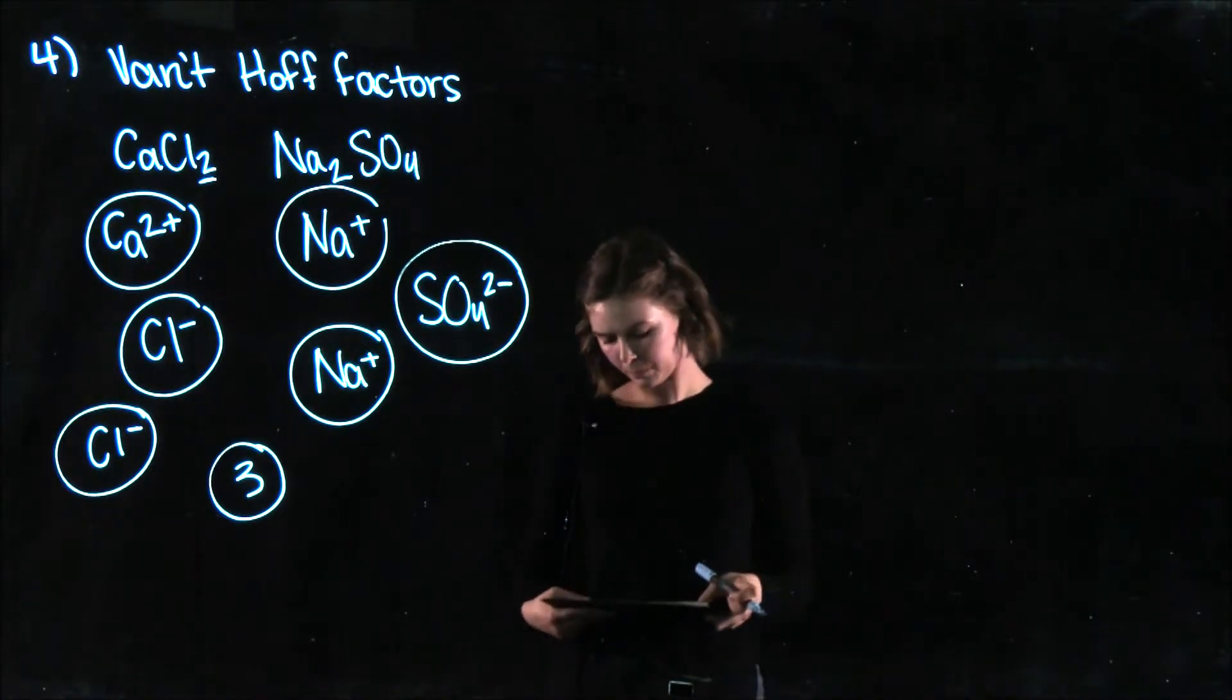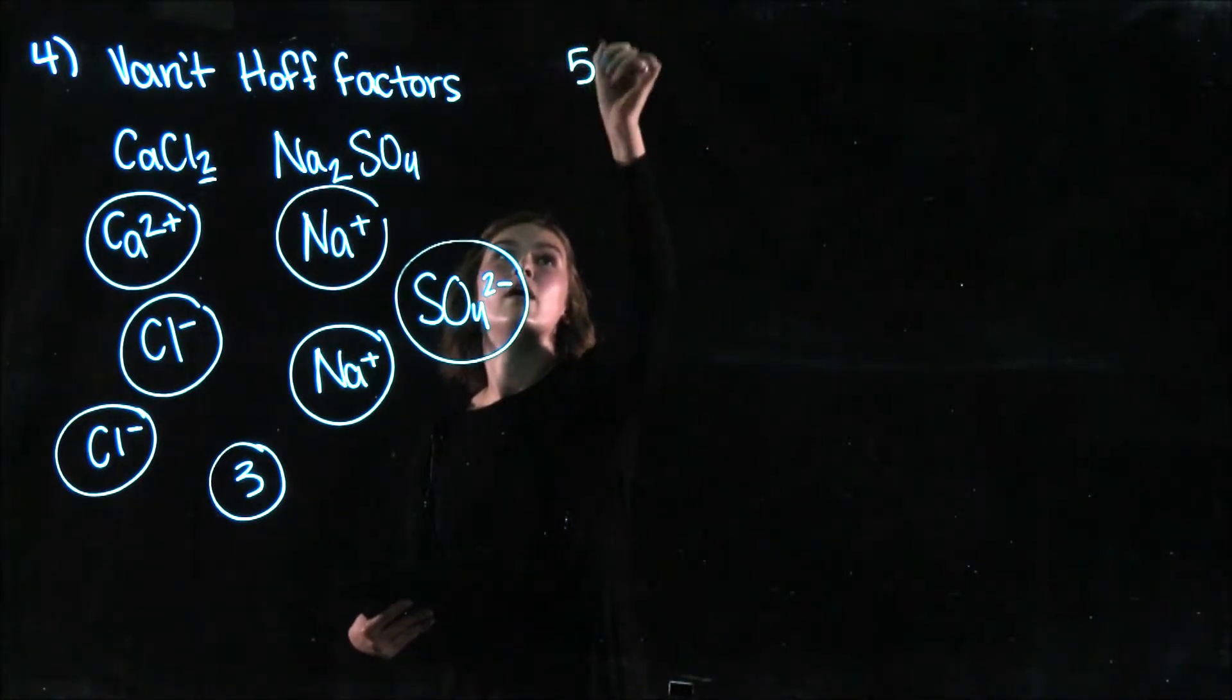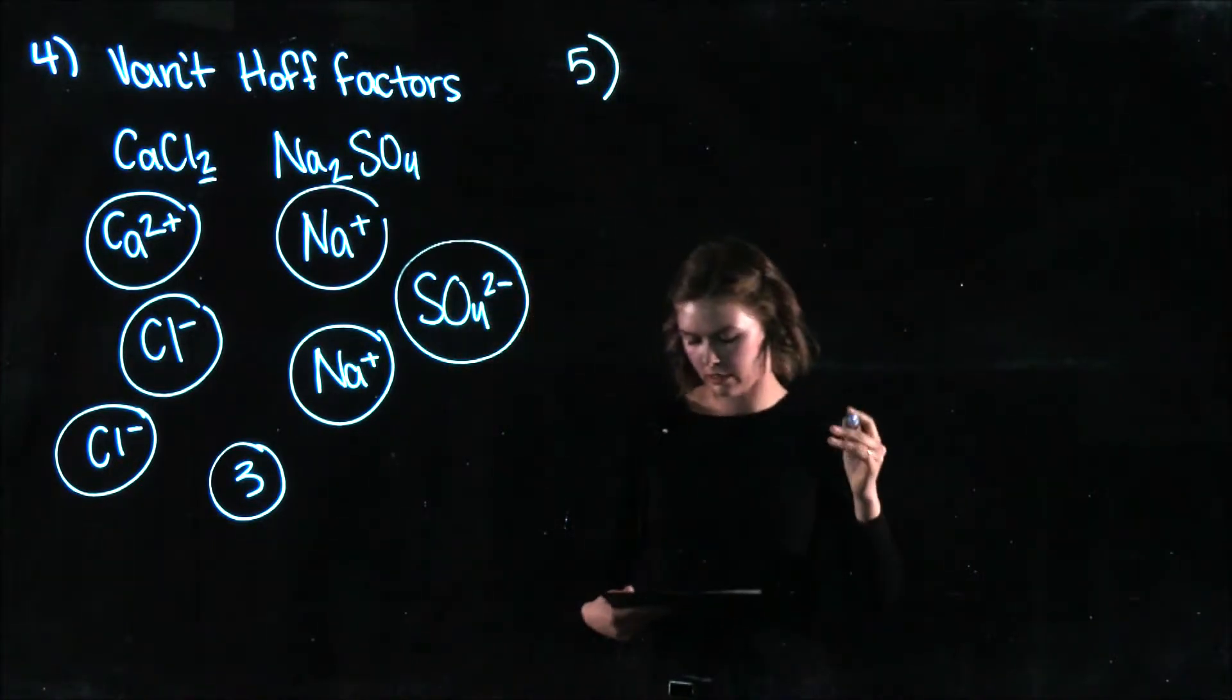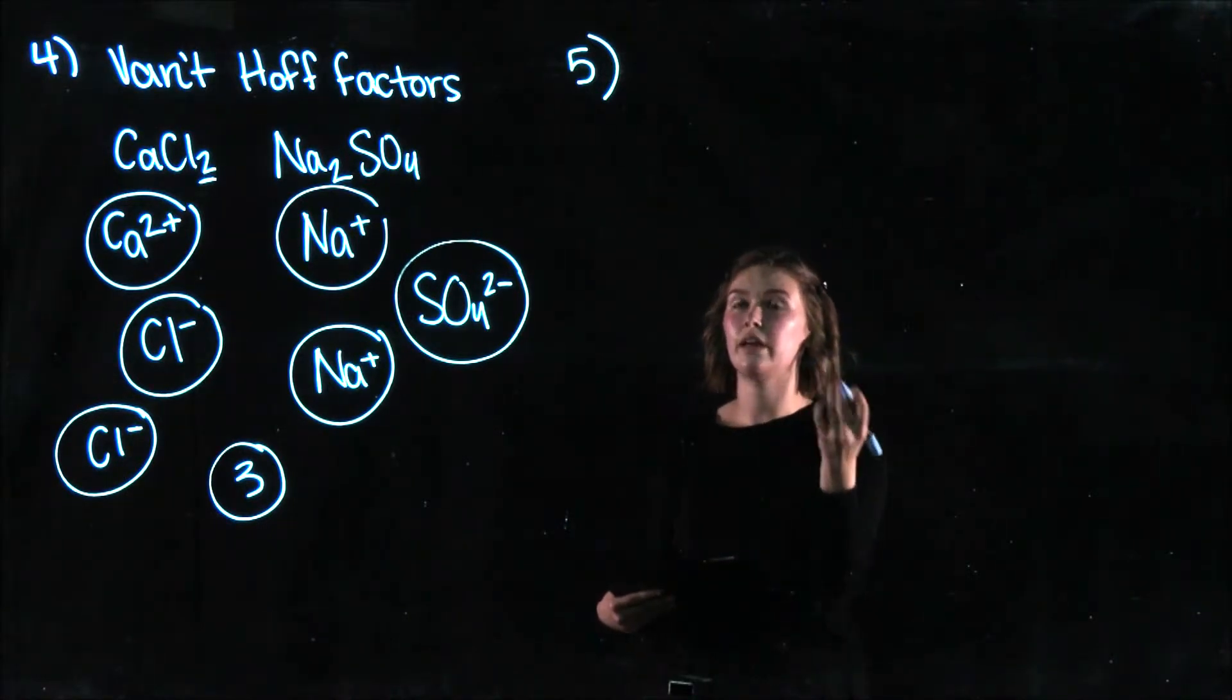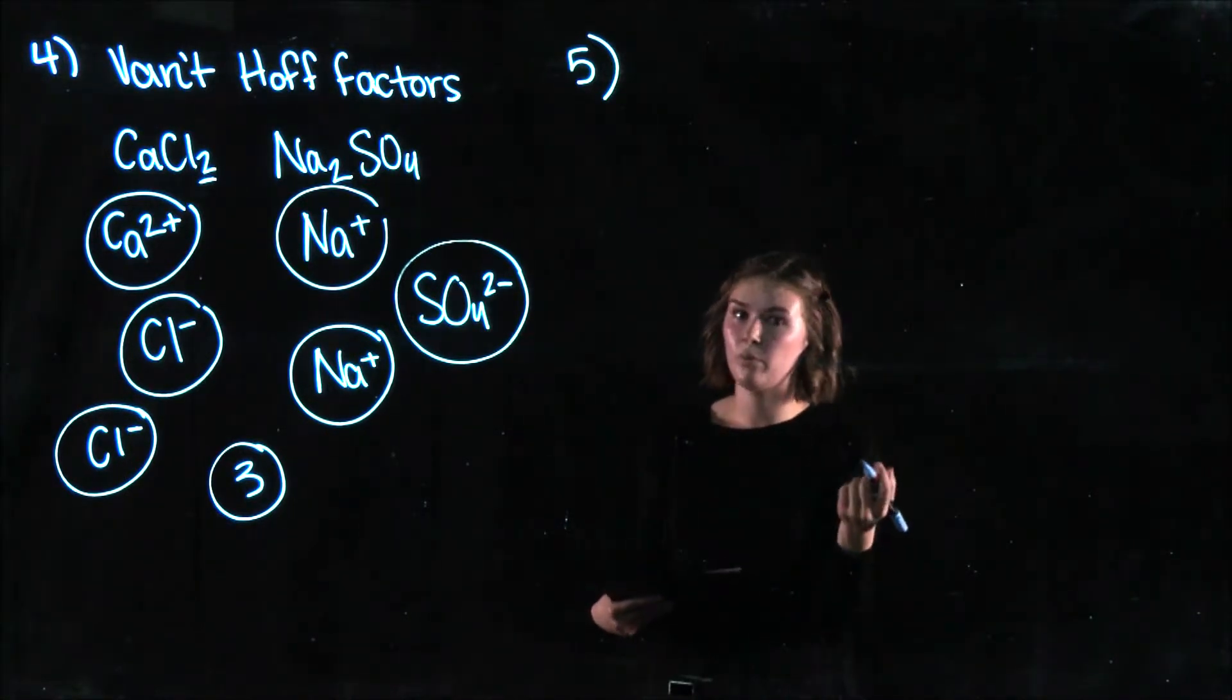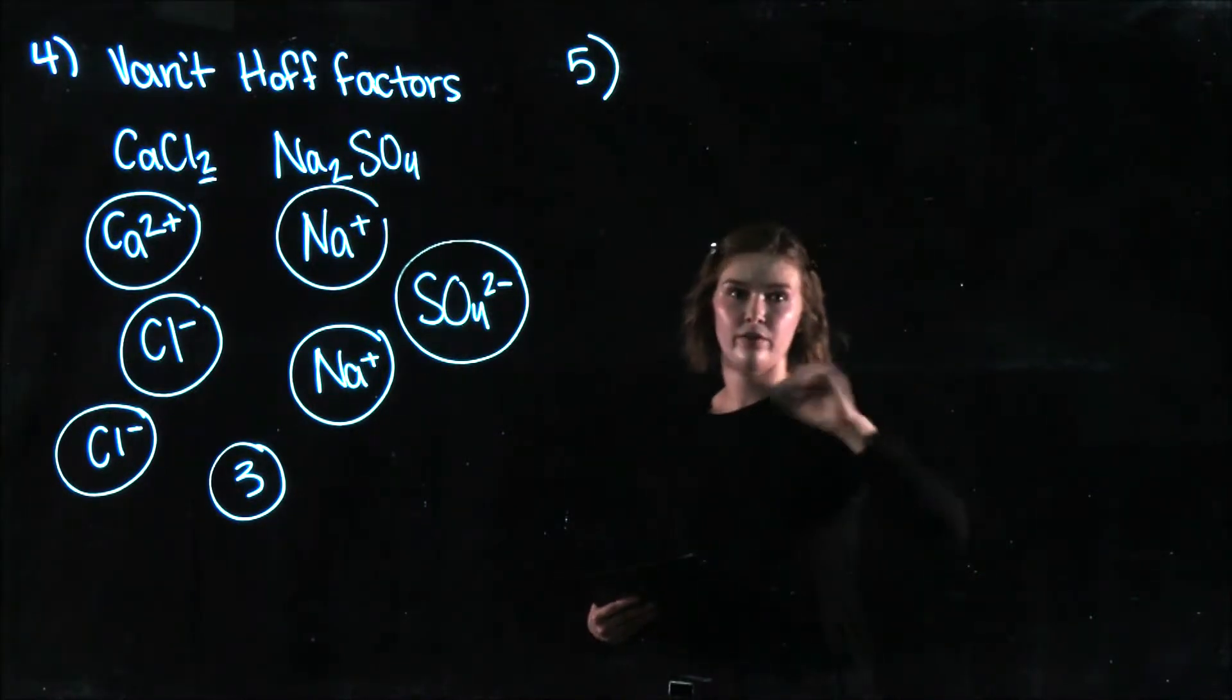So question five is a little more involved. So in step three we calculated the actual boiling point elevation. But in this one we're going to calculate the theoretical boiling point elevation. Which is what, in a perfect scenario, in a perfect world where everything went right, what would the actual boiling point elevation of your solution be?